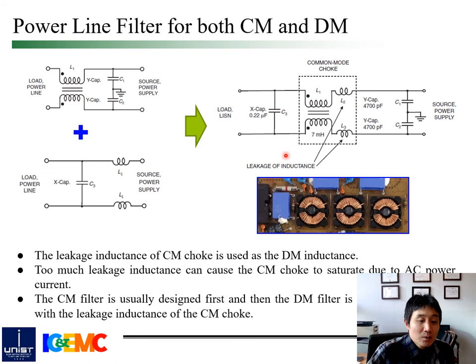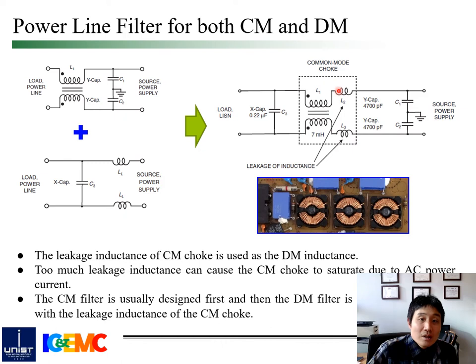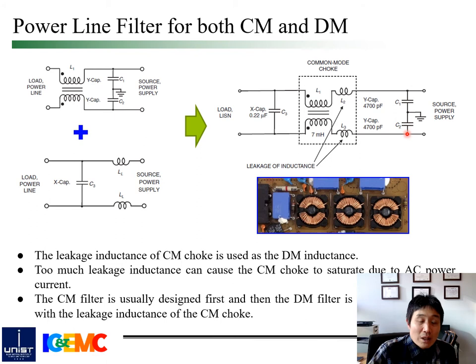The common mode filtering and differential mode filtering can be efficiently combined in a practical power line filter. Because a common mode choke causes some leakage inductance, this intrinsic leakage inductance is utilized as the differential mode inductance. Some larger value of differential mode inductance is not allowed due to the magnetic saturation effect. So finally, a typical structure of a power line filter consists of Y capacitance, CM choke, and X capacitance from the source side to receiver side. In the filter design process, common mode filter is usually designed first, then differential mode is designed starting with the leakage inductance of the CM choke.